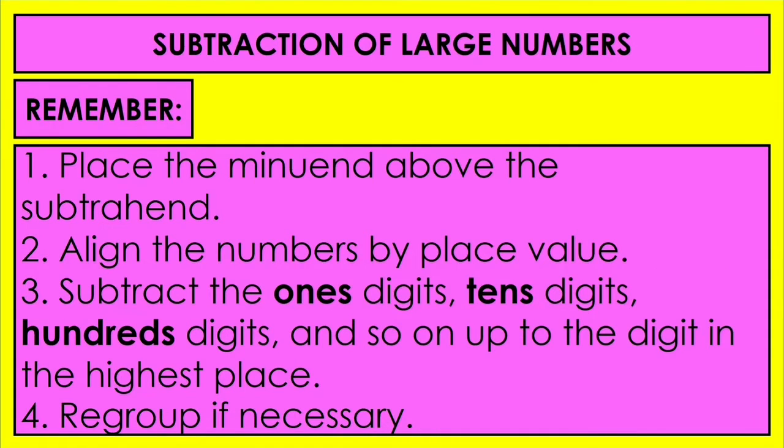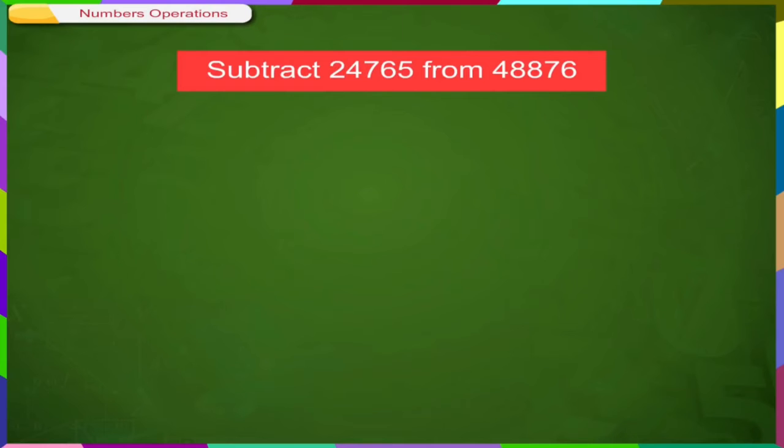Now the important rules for subtraction of large numbers. Number 1, place the minuend above the subtrahend. Align the numbers by place value. Subtract the 1's digit, then 10's digit, 100's digit, and so on up to the digit in the highest place. And regroup if necessary.